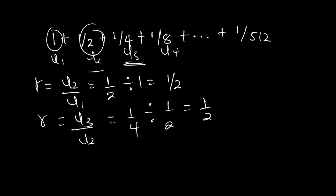So in the GP the next term is obtained by multiplying the common ratio by the previous term, and in arithmetic progression we add the common difference to the previous term to obtain the next term. That is the introduction to series and sequence. In the next videos we will take the arithmetic progression and geometric progression and look at how we do the actual calculations. See you next time.